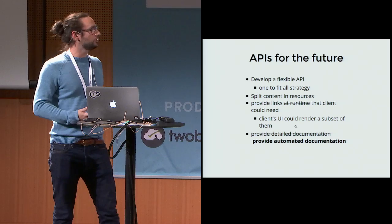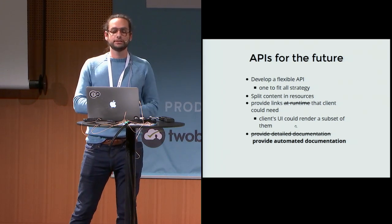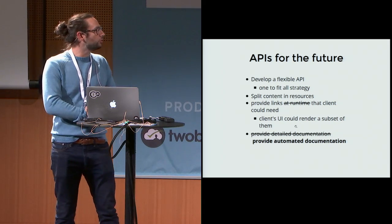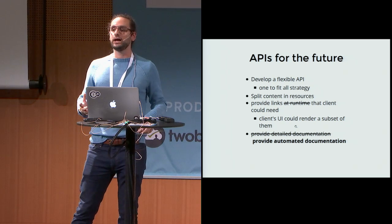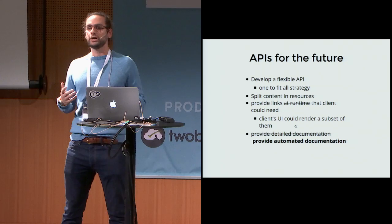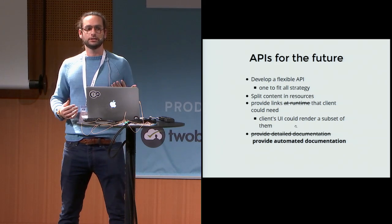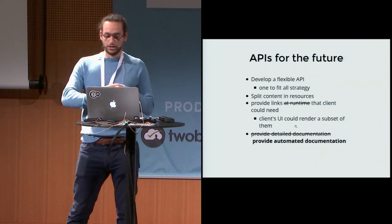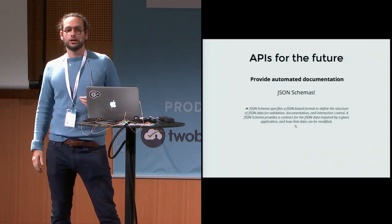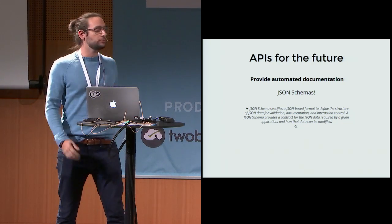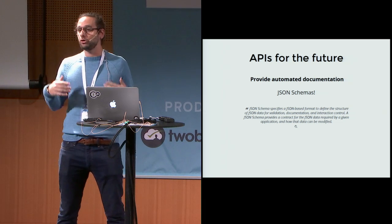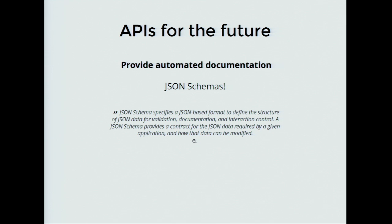The flow is pretty much the same — we still develop a very flexible API, still split contents into resources, and do everything we did before. The only difference is that instead of providing hypermedia at runtime, we provide an automated way for the client to parse hypermedia and know, when it faces a response, what hypermedia and what actions that response supports. To achieve that, we use JSON schemas — already out there, tested, IETF RFC-published, used for validating JSON, adding data types, and validating structure.